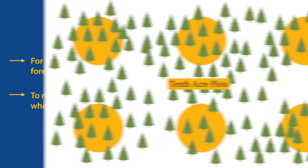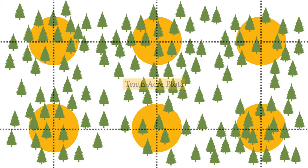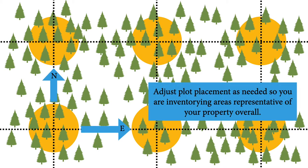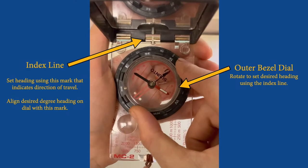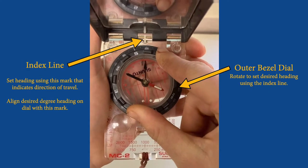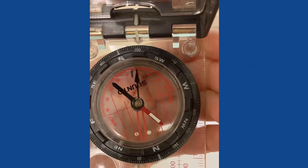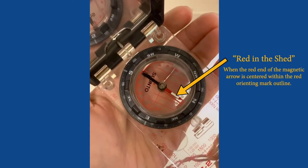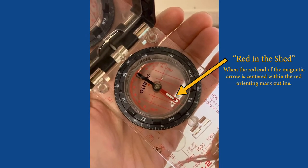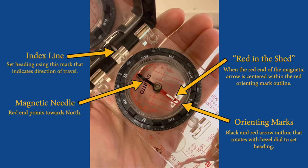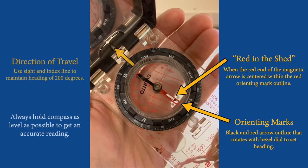A good compass is helpful for navigation and maintaining a heading when laying out plots. Plots should be set up on a grid or consistent directional heading across your property, placed in areas that most represent the trees and fuels in your forest. To use a compass, spin the outer bezel dial to set the heading you want — for example, 200 degrees. Then rotate your body until the needle shows 'red in the shed,' meaning the red and black ends of the magnetic needle align with the orienting marks underneath. The index line will then point towards your desired direction of travel — in this case, 200 degrees southwest.